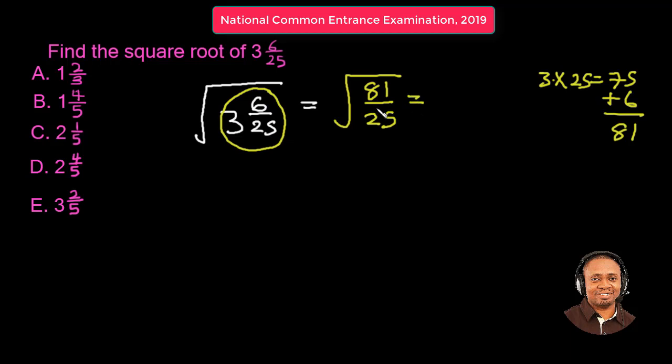So now we can find the square root of 81. The square root of 81, as we know, is 9. The square root of 25 is 5.